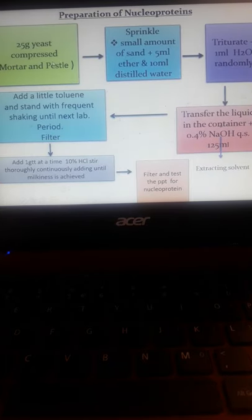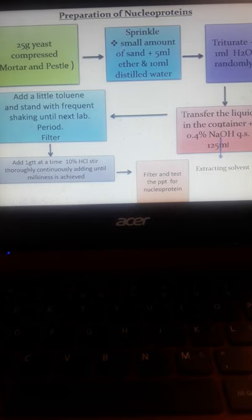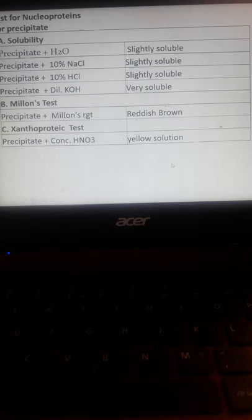The nucleoprotein has genetic material that plays an important role especially in protein synthesis. Preparation of nucleoproteins: we have 25 grams yeast you compress then sprinkle with water, transfer the liquid into container to make it 125 ml. Add the sodium hydroxide, called the extracting solvent. Add a little toluene and stand with frequent shaking until next laboratory period. Then you filter.